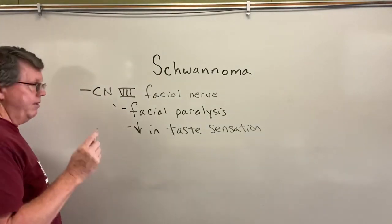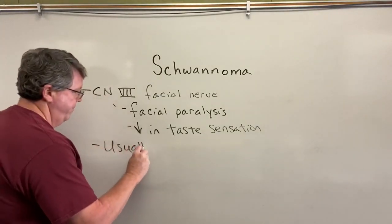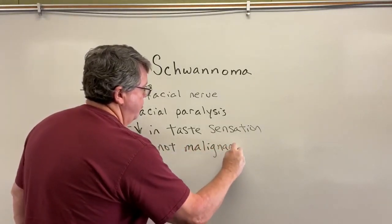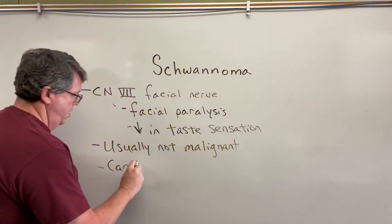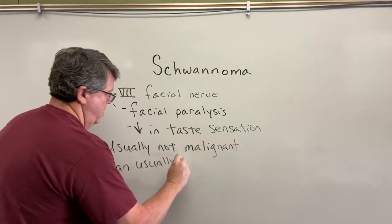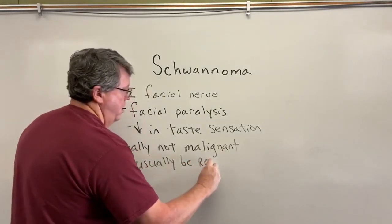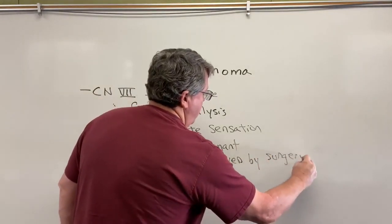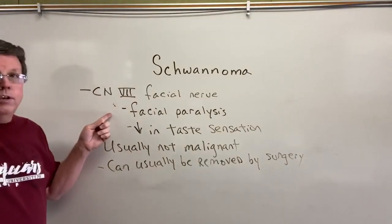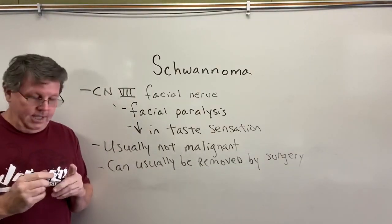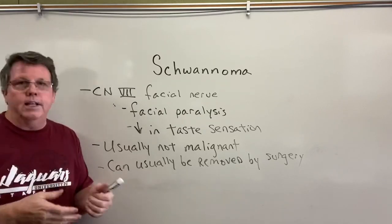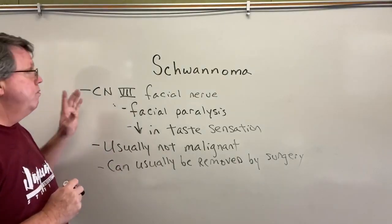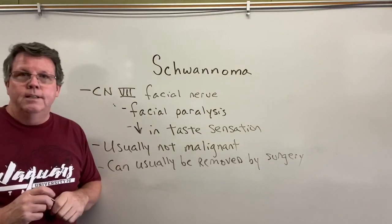The good thing about these is that they're usually not malignant and can usually be removed by surgery. You've got to realize it can affect any peripheral nerves — you can get these in the arms and legs, you can get them in the eyes and cause vision problems and things such as that. So for the most part, that's schwannomas.